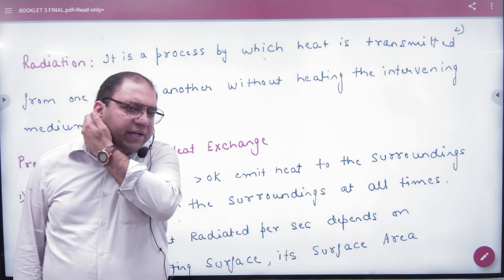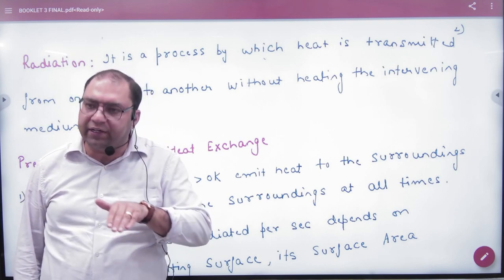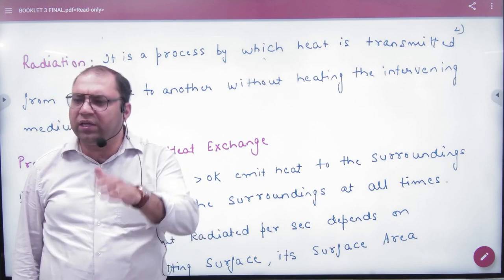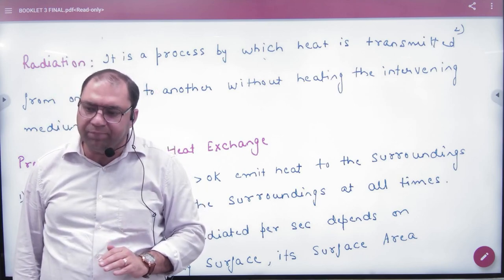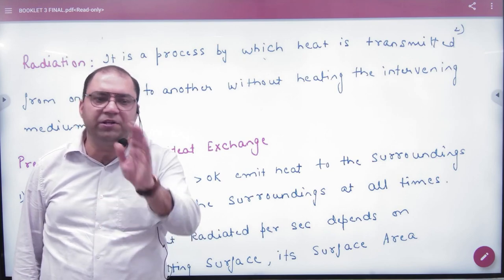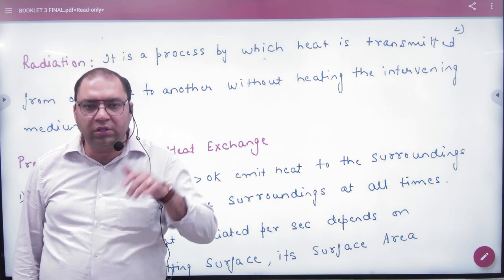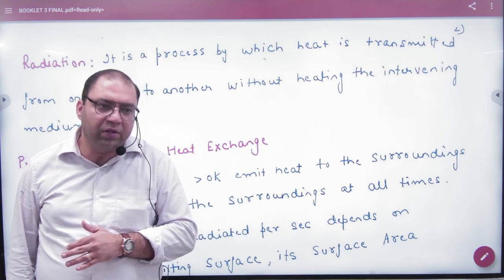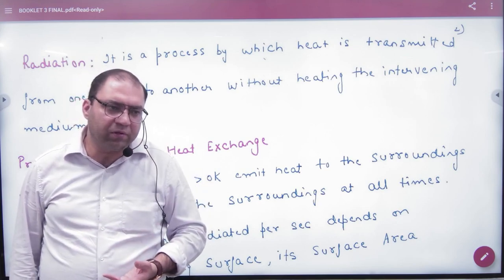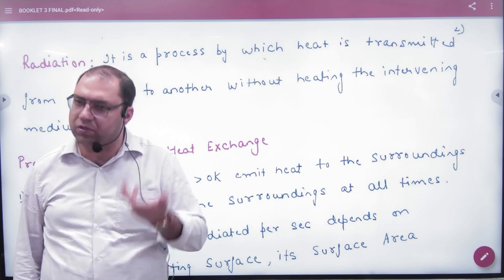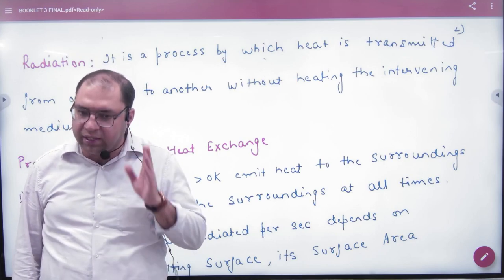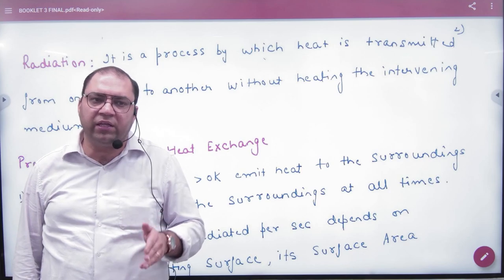Electromagnetic means these radiations travel in the form of electric field and magnetic field, so they don't need a medium to travel. Any warm body is the source of heat radiations. In fact, it doesn't need to be warm — even a cold body emits some radiations.